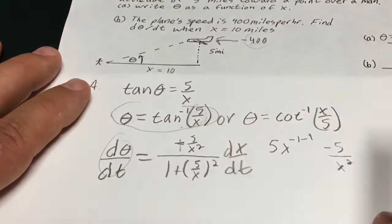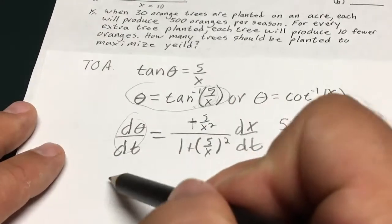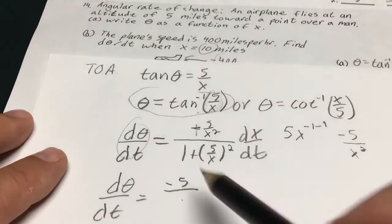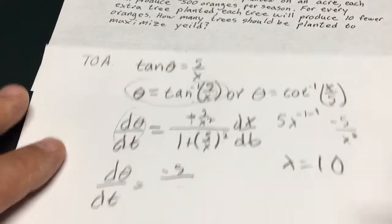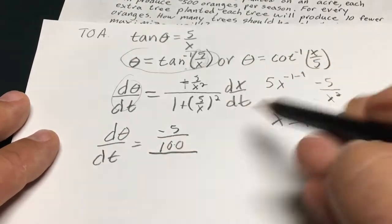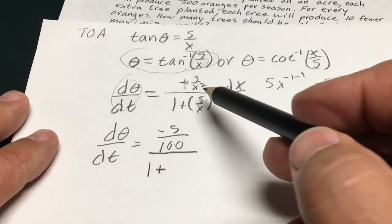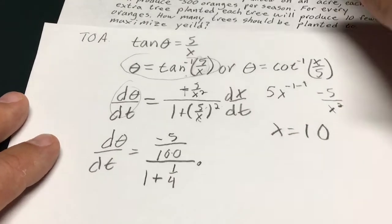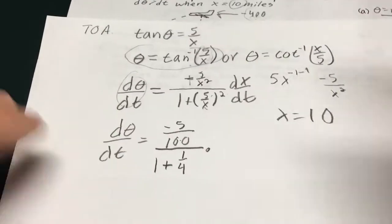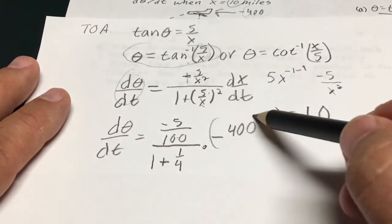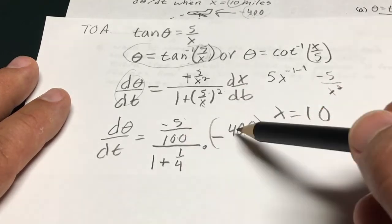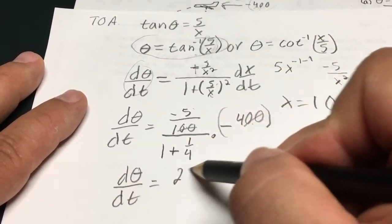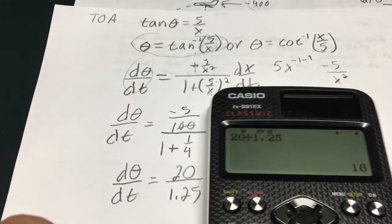So they want to know how fast this angle is changing. That's d theta/dt. Given all this other information. So let me neat this up a little bit and start doing the arithmetic. So I have d theta/dt. That's the question. Equals negative 5 over x squared. And I believe they also give me when x equals 10. So I'm going to plug in a 10 for that. At x equals 10. So that's going to give me 5 over 10 squared, which is 100, over 1 plus 5 squared, which is 25, over 10 squared, which is 100. 5 over 10, which is 1 half, which squared is 1 fourth. Times the negative 400 miles per hour. Not a lot of arithmetic. When I do 400 times 5 over 100, that gives me just 4. That's going to give me positive 20 over 1.25. So d theta basically dt equals 20 over 1.25.